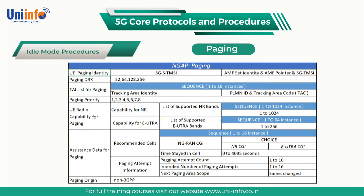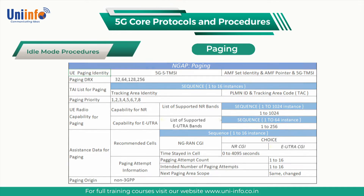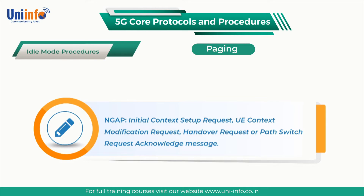The AMF can also use the core network assistance information parameter structure to provide the base station with information regarding a UE-specific DRX cycle. This parameter structure can be included within an NGAP Initial Context Setup Request or UE Context Modification Request,